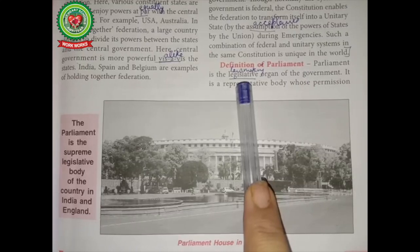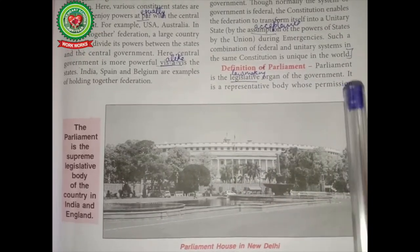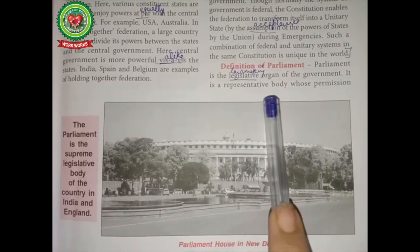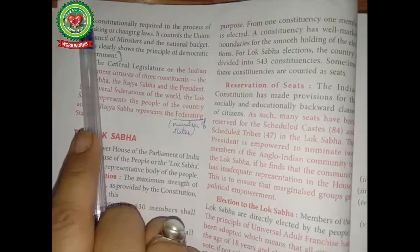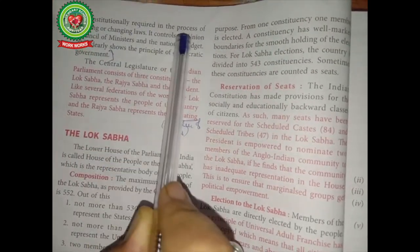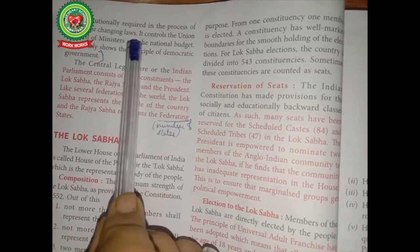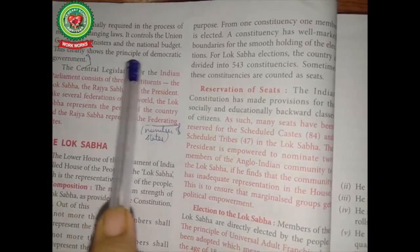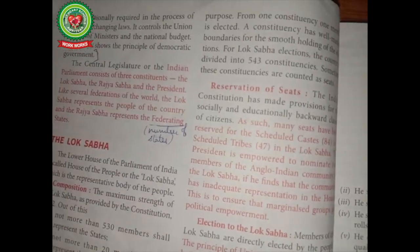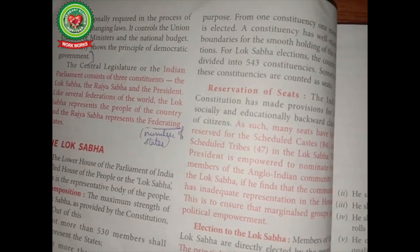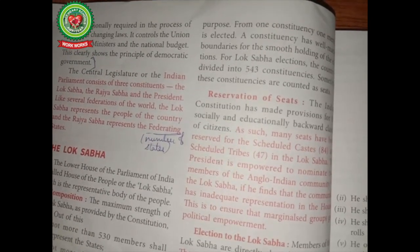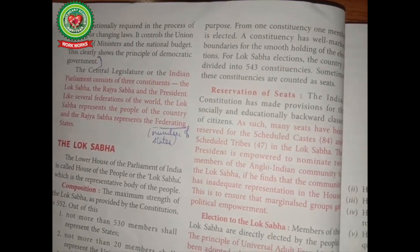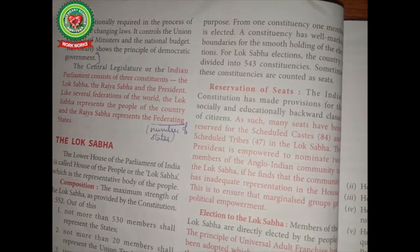Definition of parliament: Parliament is the legislative — meaning law-making — organ of the government. It is a representative body whose permission is constitutionally required in the process of making or changing laws. It controls the union council of ministers and the national budget. This clearly shows the principle of democratic government.